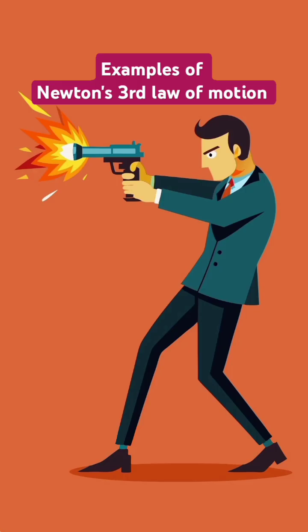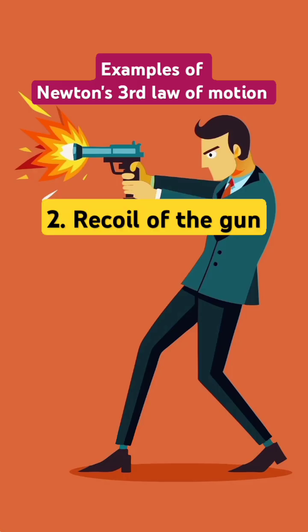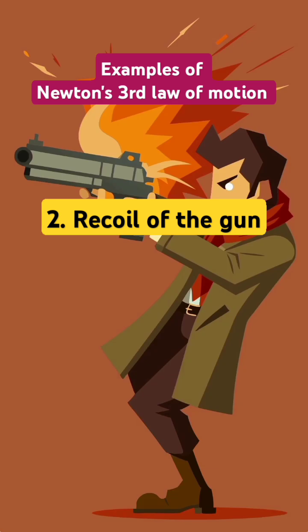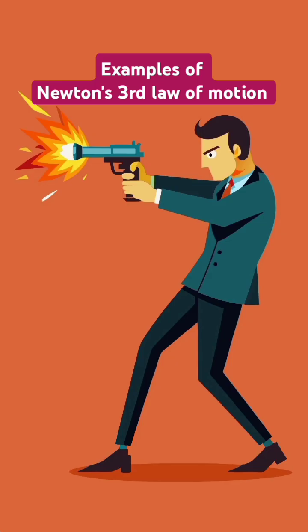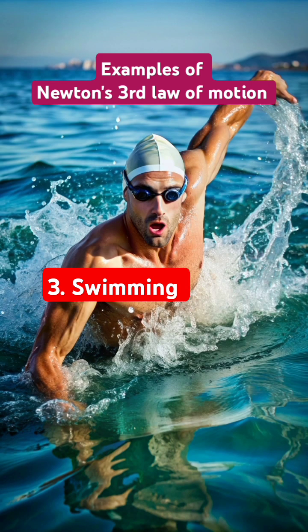Second example: recoil of a gun. When a bullet is fired from a gun, the bullet is pushed forward and the gun is pushed backward with an equal and opposite force. This backward movement of the gun is known as recoil.